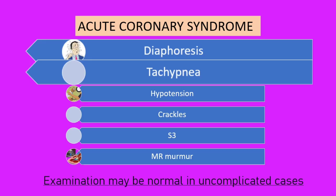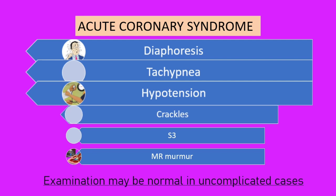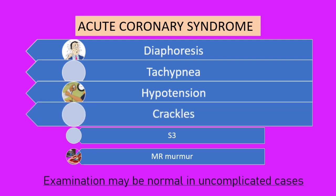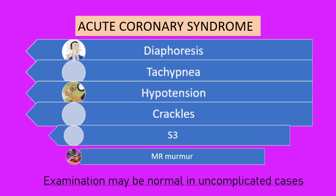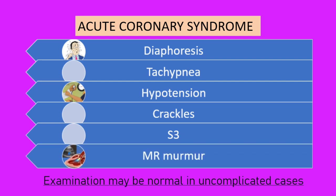The most important cause of chest pain requiring early diagnosis to initiate prompt treatment is acute coronary syndrome. The patient can present with diaphoresis, tachypnea, hypotension, or low blood pressure. They can have crackles on auscultation of the chest, a third heart sound, and a murmur of mitral regurgitation due to ischemia of the papillary muscles. However, in uncomplicated cases, the examination may be normal.